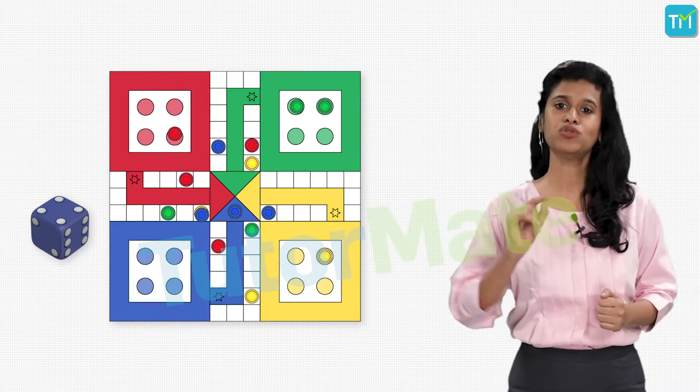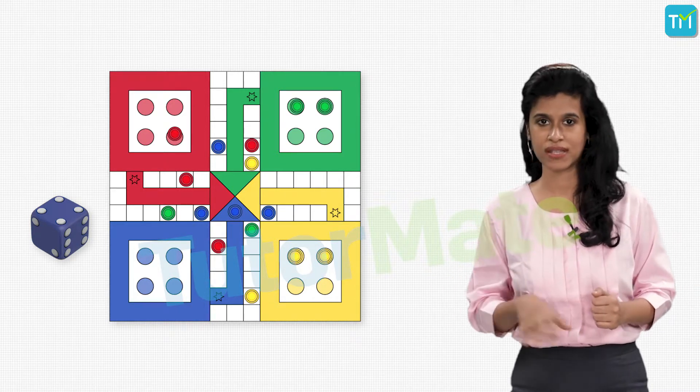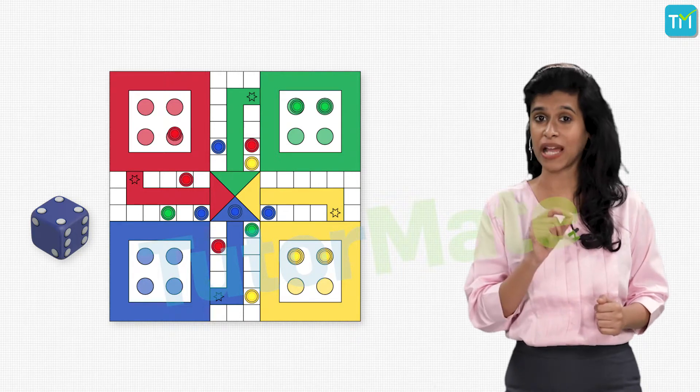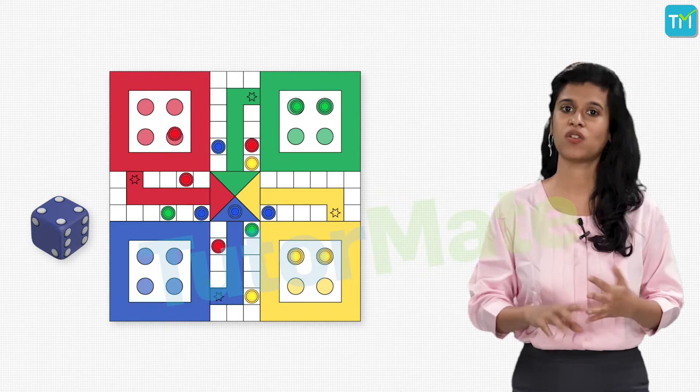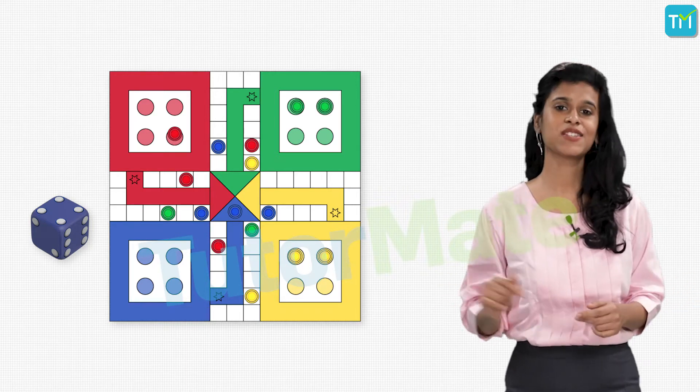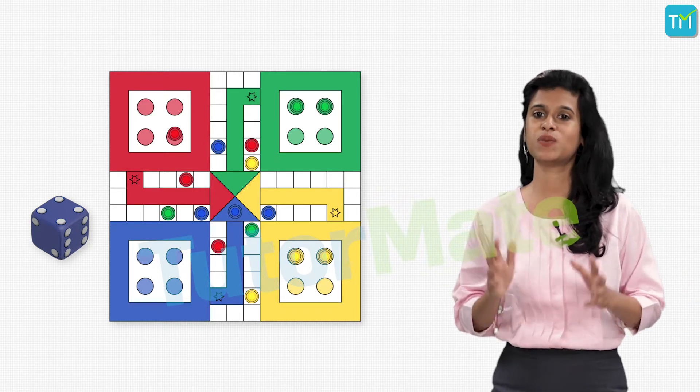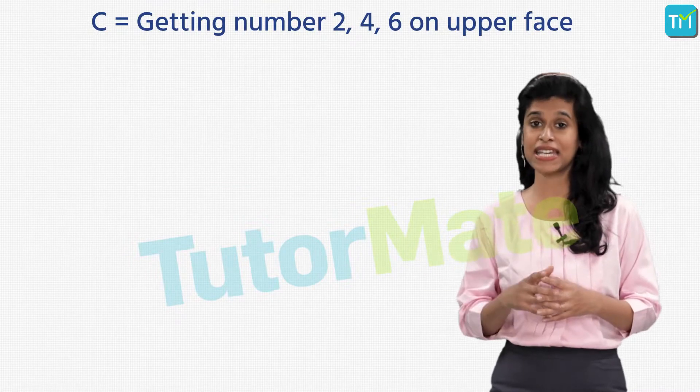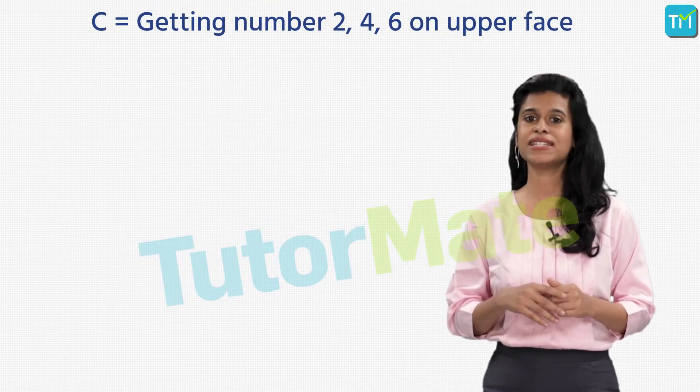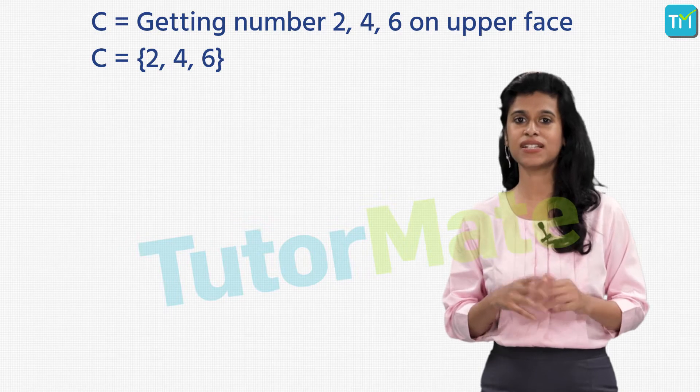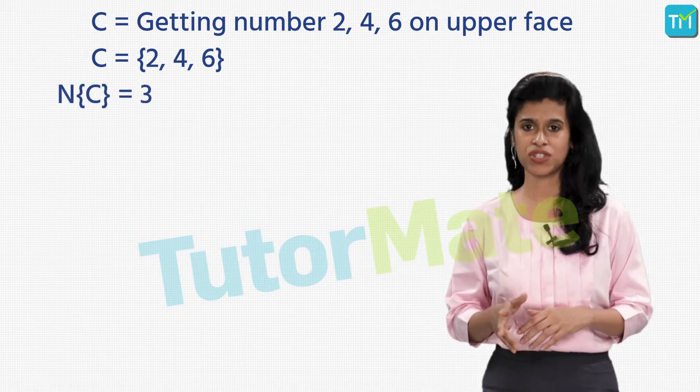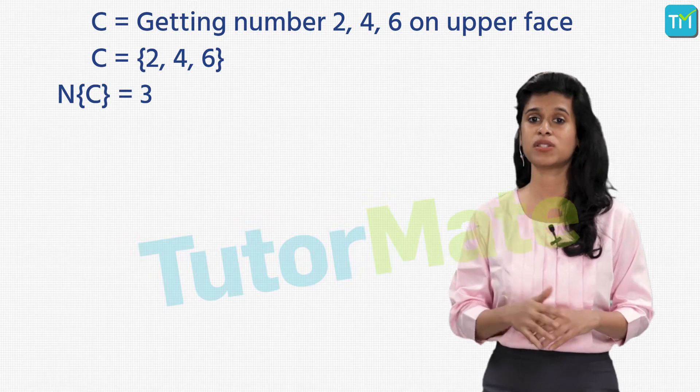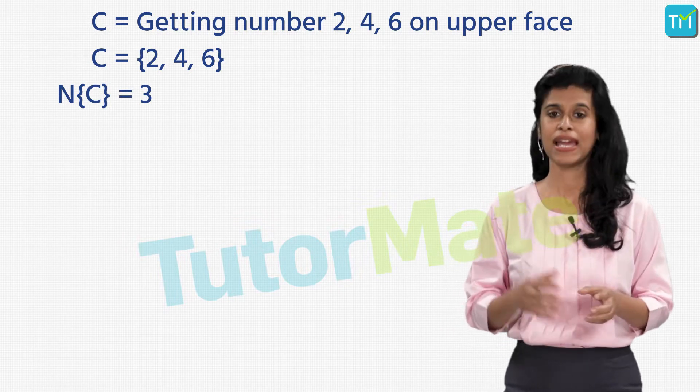And this means that your favorable outcomes in this experiment are two, four, and six, which are all even numbers. Let's call getting even numbers, which are two, four, or six, as the event C. So we write C = {2, 4, 6} in curly brackets. Also we get n(C) = 3, as there are three possible outcomes for this event.